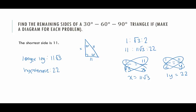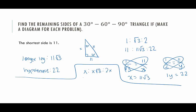The other way I sometimes use is variables. I say x, x root 3, and 2x — that's always the ratio of side lengths. Then I fill in: 11 is equal to x. So x equals 11. Based on that, I just plug in 11 anywhere I see an x. The longer side: x root 3 is equal to 11 root 3. And the hypotenuse: 2x equals 2 times 11, so 2x equals 22. The hypotenuse is 22.